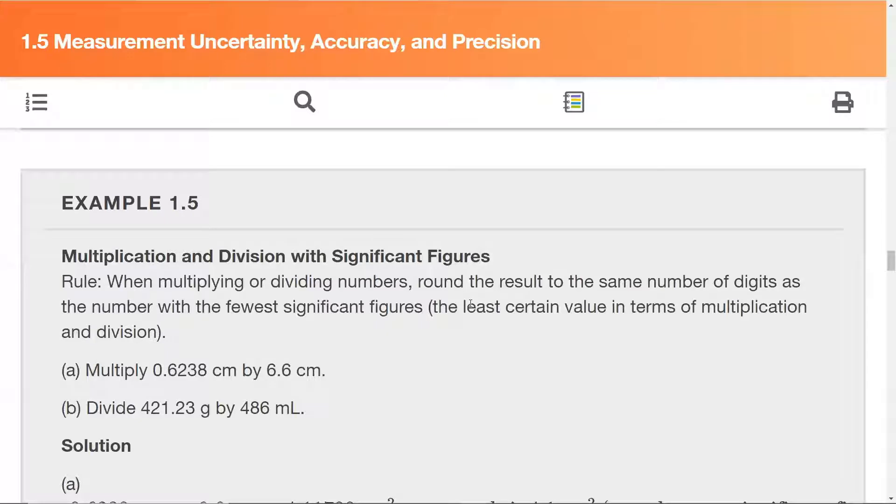The idea here is that we're keeping the least certain value. We're keeping the number limited to the least certain value. In this case, multiplication and division, that is the number with the fewest significant figures. So what do we have to do?